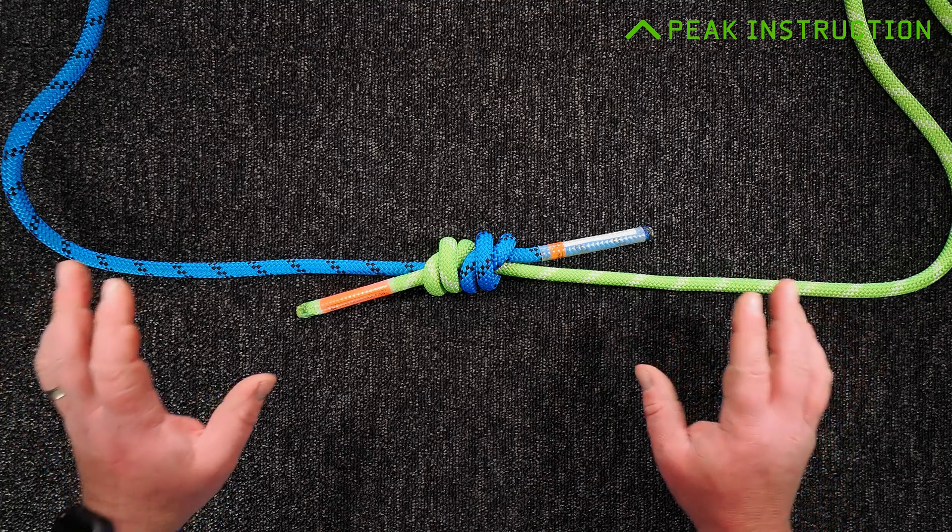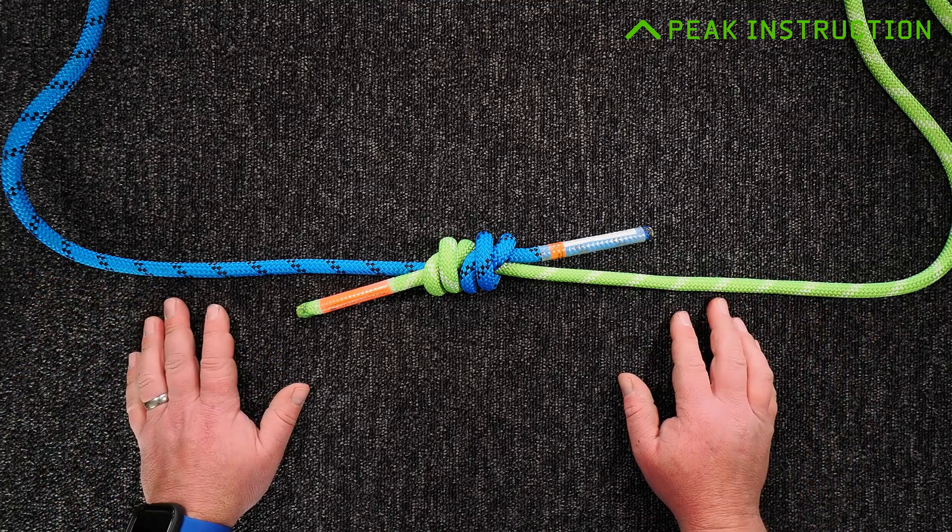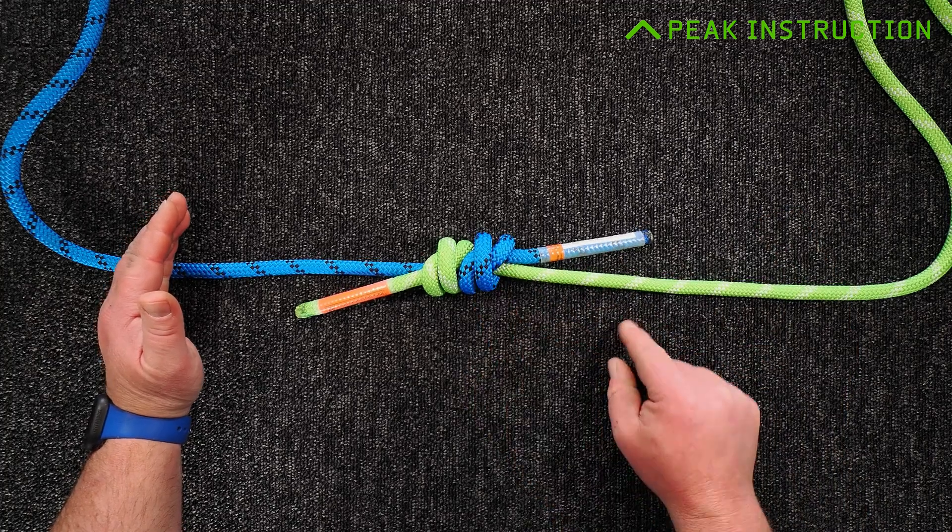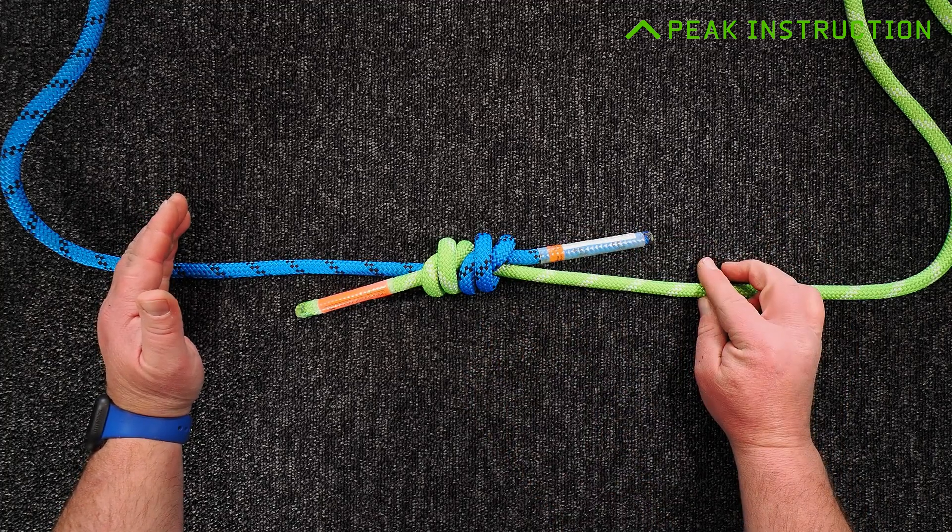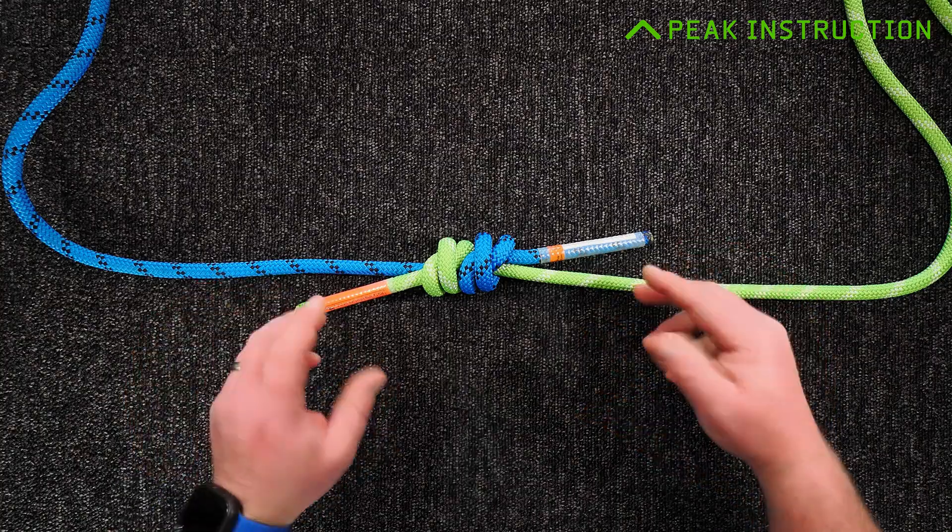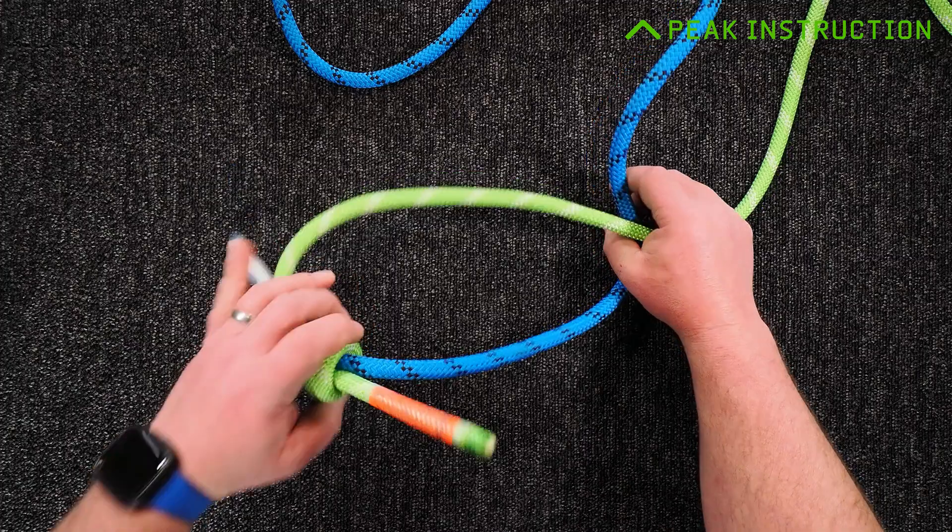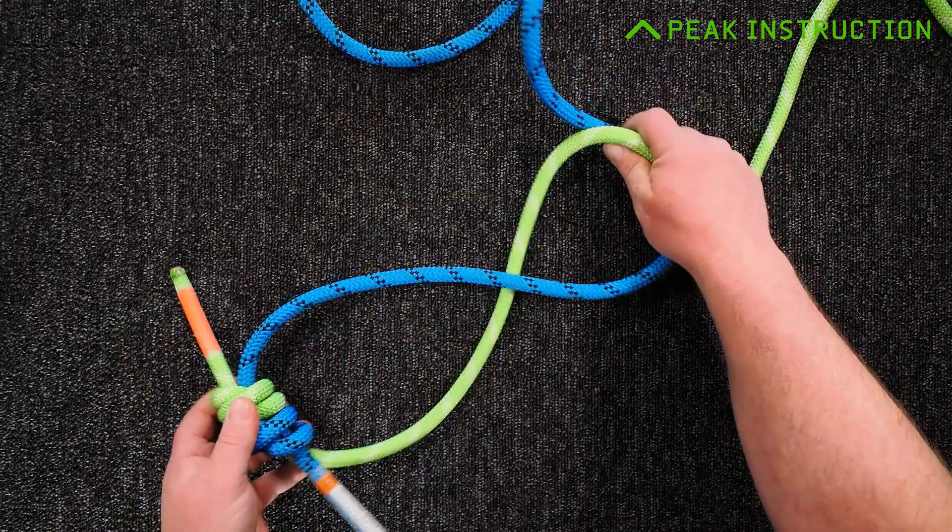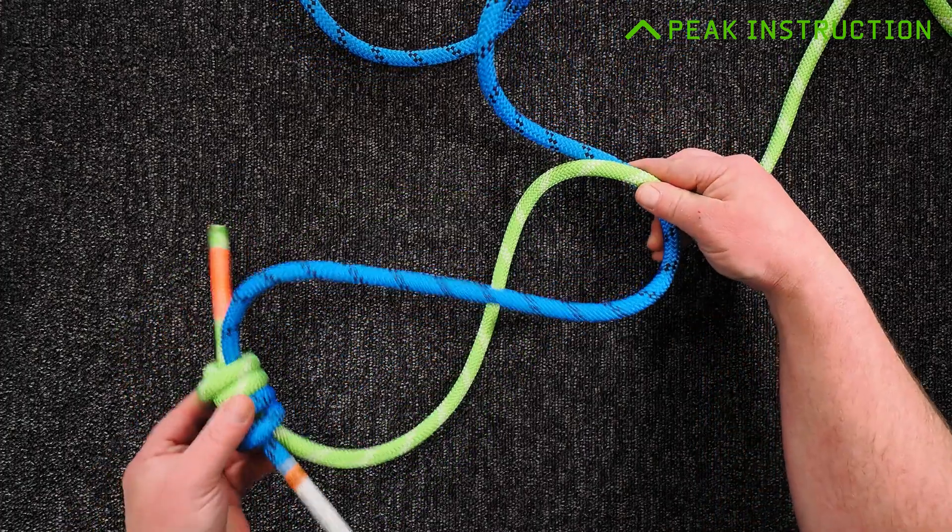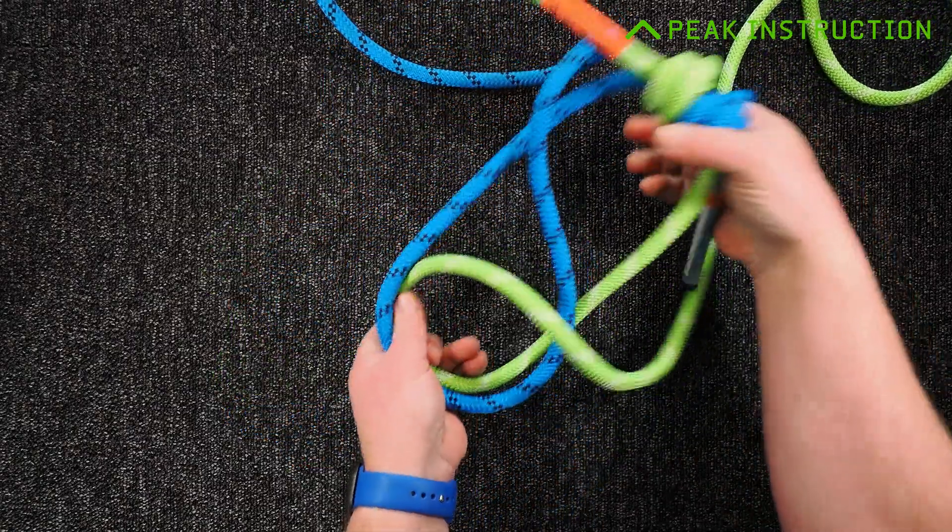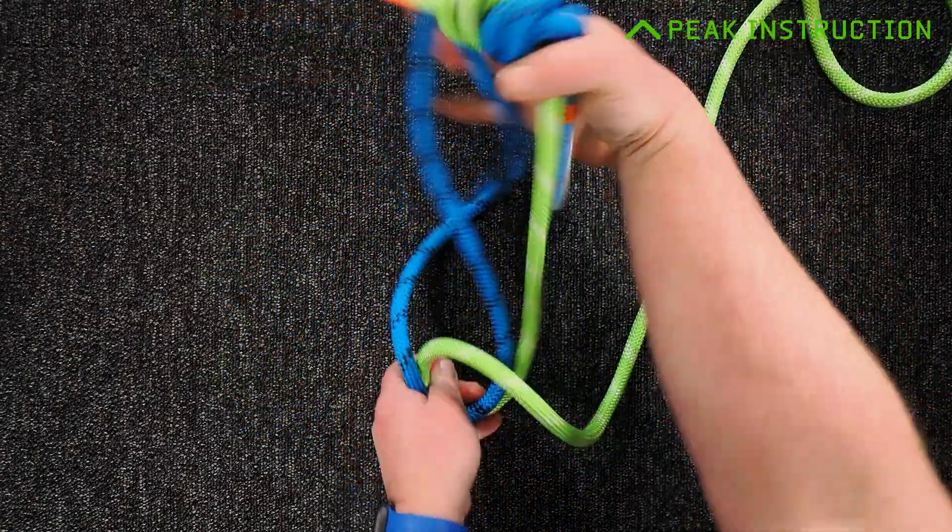The next step is to tie an alpine butterfly here in this section of rope, keeping that join within the loop of the alpine butterfly. You'll need to know the twist method of tying an alpine butterfly. We don't want a huge loop but you might need to start big just so you've got room to pass this bulky join through. Bring that around over.